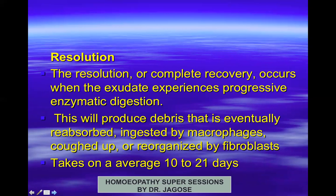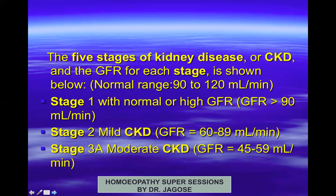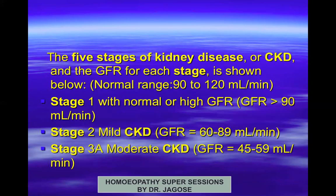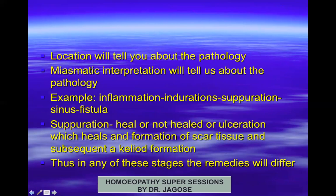All stages of pneumonia can be equated with the miasms. Regarding chronic kidney disease, pathological changes include glomerular sclerosis, tubular interstitial fibrosis, loss of normal renal architecture, microvascular and capillary rarefaction, hypoxia, and tubular atrophy. There are five stages of kidney disease from Stage 1 (normal or high GFR) through Stage 5. The physician must know in which stage the patient is presenting in order to help appropriately.